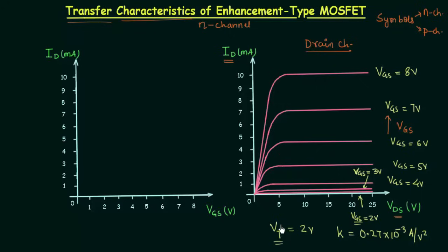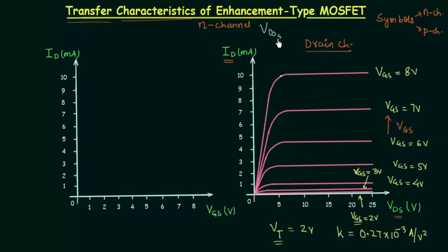When gate-to-source voltage is the same as the threshold voltage, the drain current will always remain equal to 0 even if you increase VDS. In all other plots, the drain current ID increases linearly with VDS, then the increment becomes very small, and finally it becomes constant. The voltage after which ID becomes constant is known as VDS saturation, and VDS saturation equals VGS minus VT.